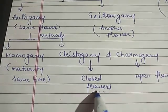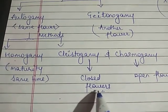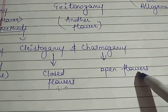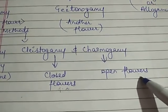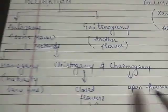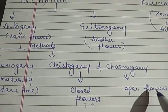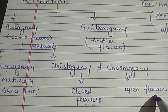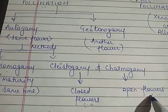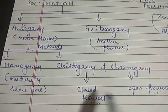In cleistogamy, the flowers are closed — cleistogamous flowers are also called closed flowers. When the flower is closed, the anther and stigma remain inside, giving 100% surety of self-pollination. Chasmogamous flowers are open flowers but relate to homogamy, where the maturation times of both stigma and stamen are the same.